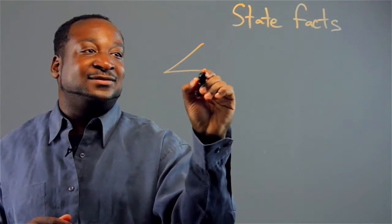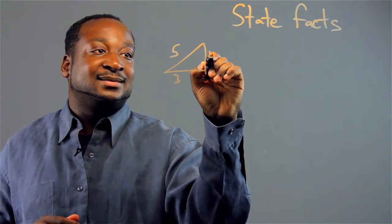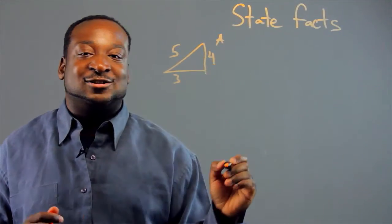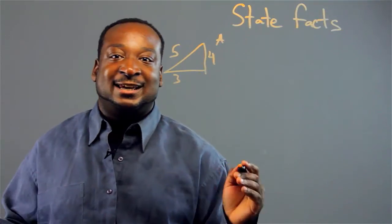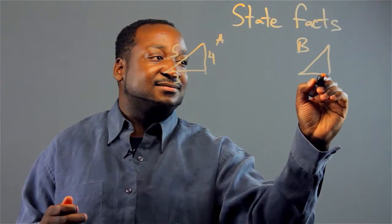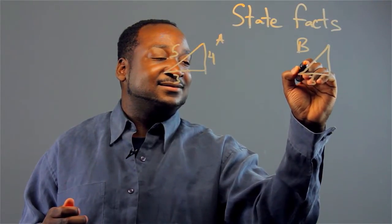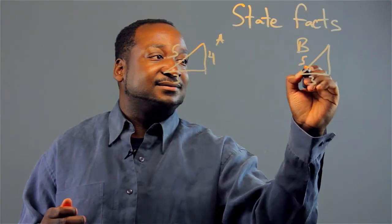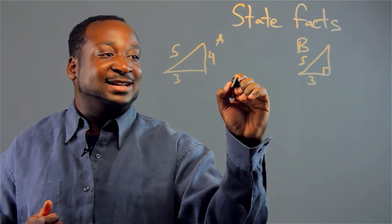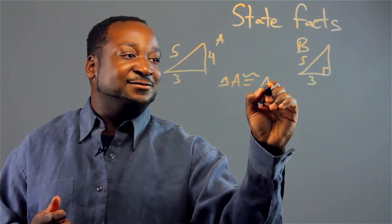Let's say for instance we have a triangle, a 3, 4, 5 triangle and let's call that triangle A. Let's say we have another triangle, triangle B. Let's say we want to prove that triangle A is congruent to triangle B.